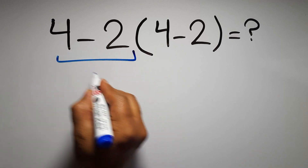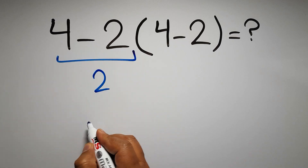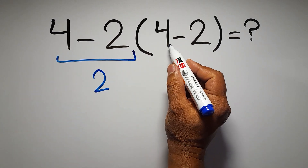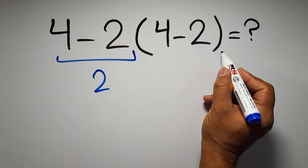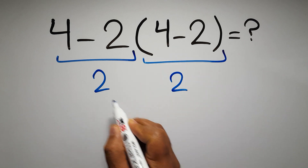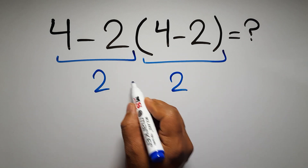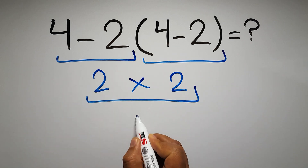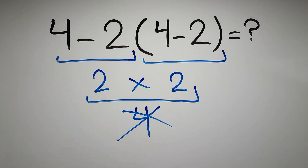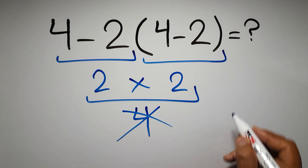Four minus two gives us two, and again here inside this parentheses we have four minus two. So two times two which equals four — but this answer is not correct because according to the order of operations,